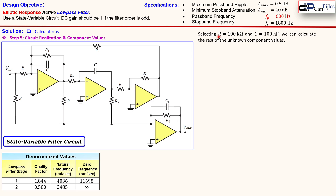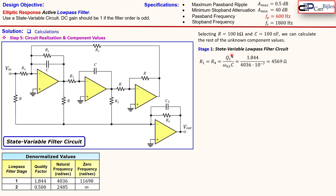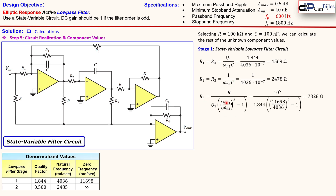We select resistor R = 100 kΩ and capacitor C = 100 nF as our base values. Then R1 = R4 is calculated using Q1, omega_n1, and C, yielding the computed resistor value. R2 and R3 use the natural frequency of stage one and the selected capacitor. R5 is calculated using the zero frequency, natural frequency, quality factor, and the 100 kΩ resistor, resulting in 7328 Ω.